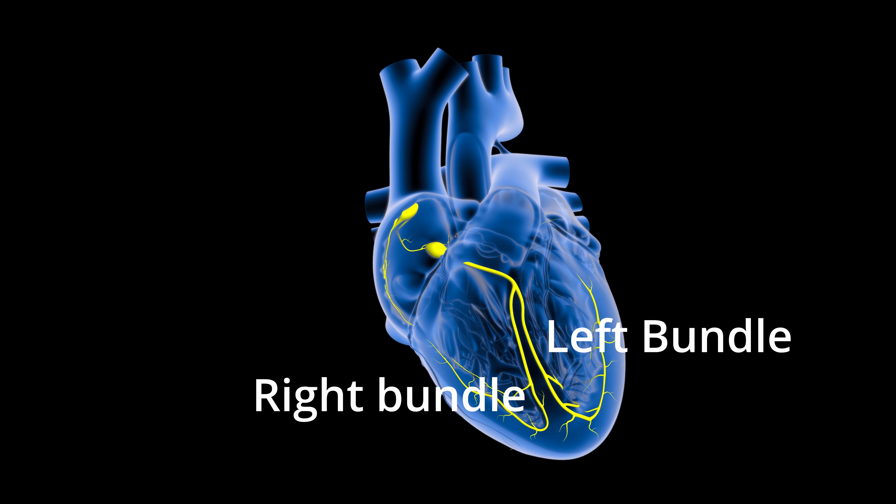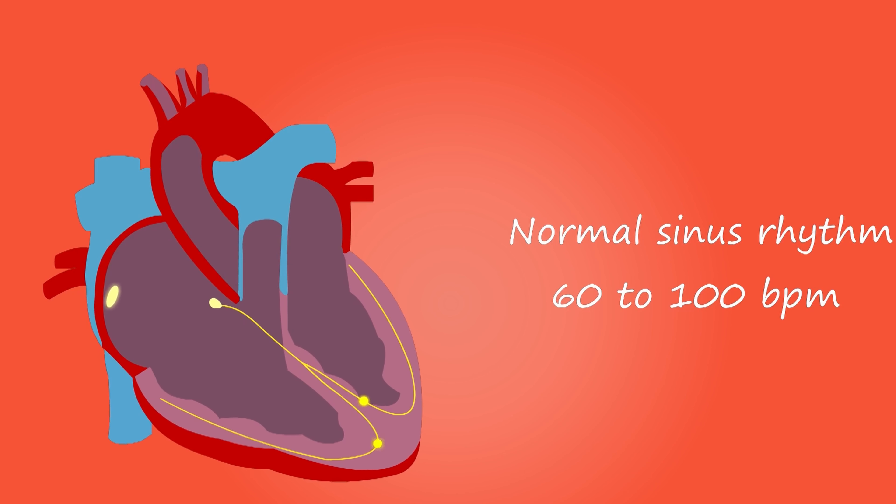Normally, electricity travels through both to cause the ventricles to contract. When the ventricles contract, blood is then injected out of the heart to deliver blood, oxygen, and nutrients to the whole body. However, there are conditions whereby these bundle branches or cables are affected, become malfunctioning, or sometimes you might not even be born with a functioning bundle. Electricity needs to find its way down from other sources and other paths. The two main problems are that conduction or electricity cannot travel through them — that's what we call a bundle branch block.